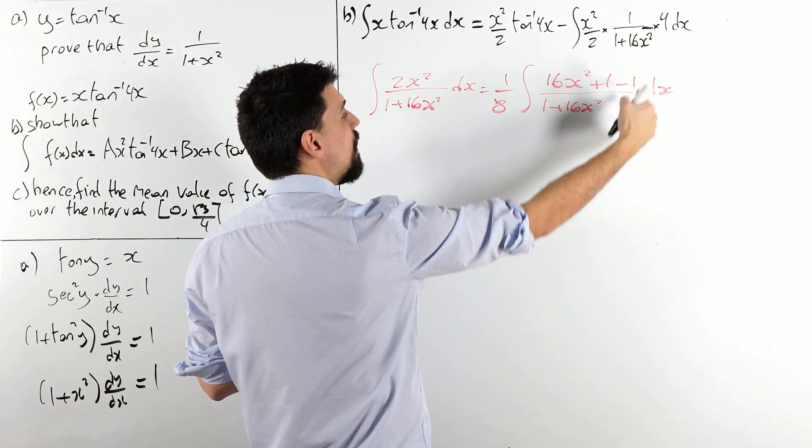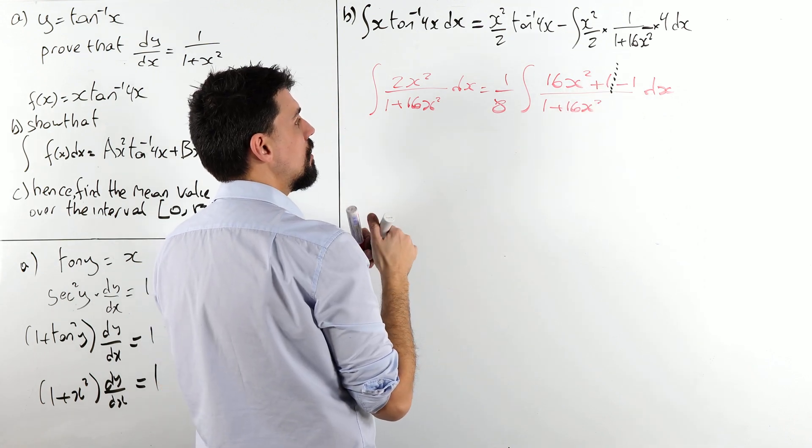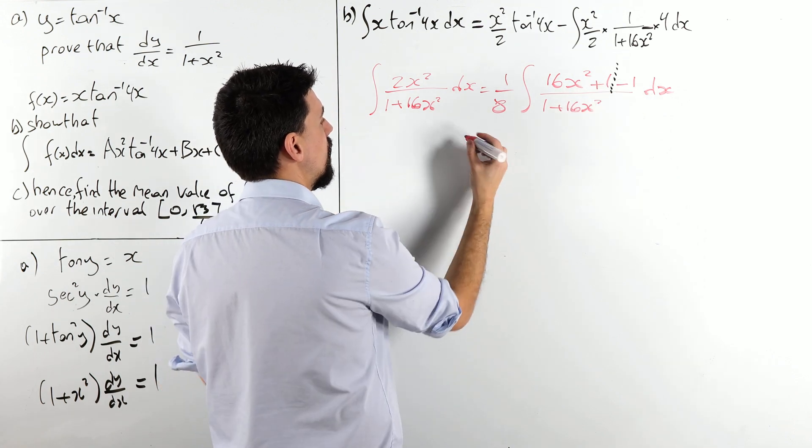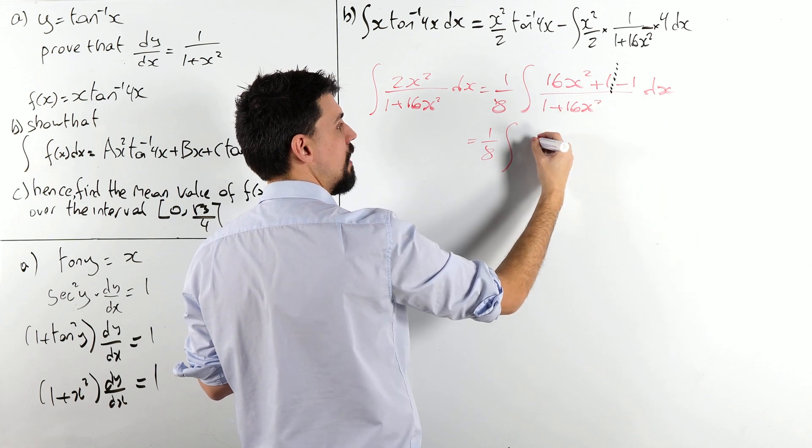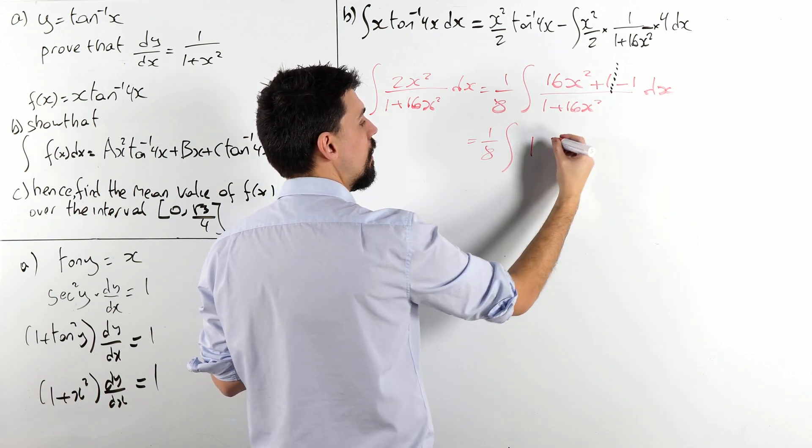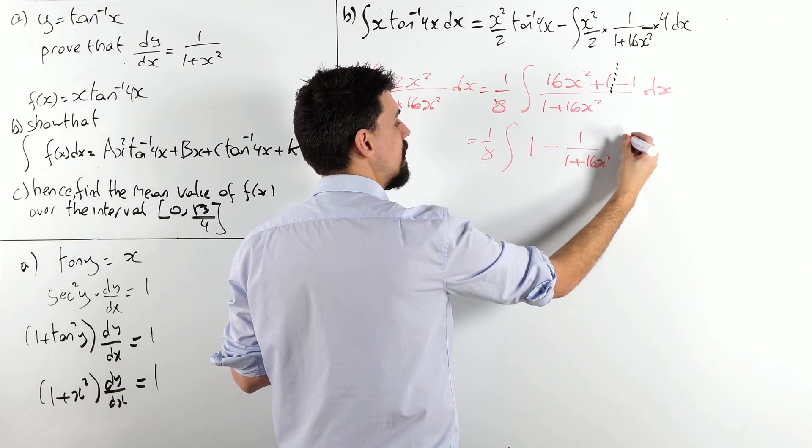Again, I think you would be in your rights to wonder what the hell I'm on about. But, what I can do now is I can split this into two separate fractions to get 1 eighth the integral of 16x squared plus 1 over 1 plus 16x squared, which is 1, minus 1 over 1 plus 16x squared.